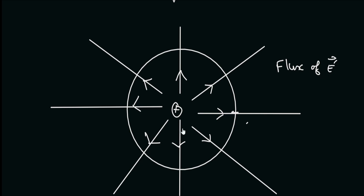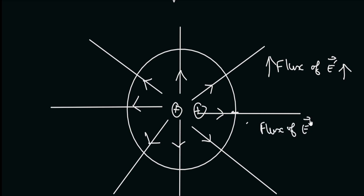Now, if we add another charge of the same magnitude, this will also have its own electric field. From the principle of superposition, the electric field from the previous charge and the new charge will add up. Therefore, the electric field will increase, and hence the flux of the electric field through the same surface of the sphere will also increase. In general, we can say that the flux of the electric field through any surface is proportional to the charge enclosed within that surface. This is the essence of Gauss's law.